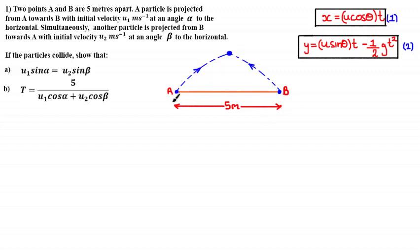Here we've drawn a diagram showing two points A and B which are five meters apart, and two particles projected from these points at the same time and towards each other. The particle projected from point A we'll call particle A, and the particle projected from point B we'll call particle B. Since we've been asked to prove equations modelling a collision, we've illustrated a collision point on the diagram.